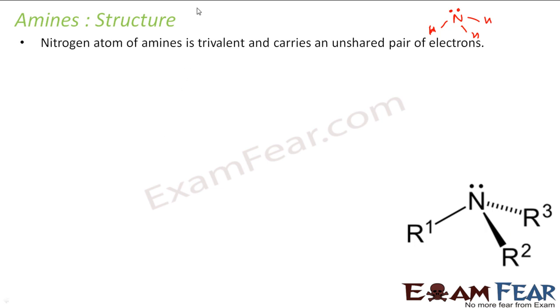So if you see the nitrogen's electronic number is 7. So it is 1s2, 2s2, 2p3. So this is the one which will take part in reaction.